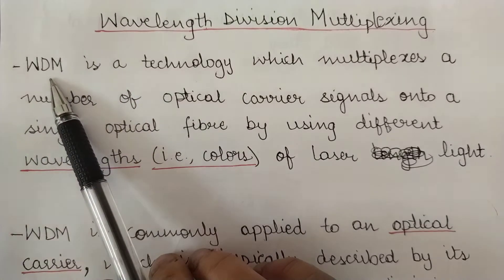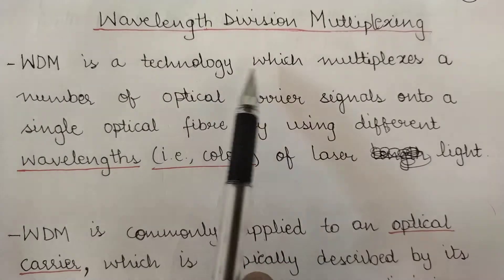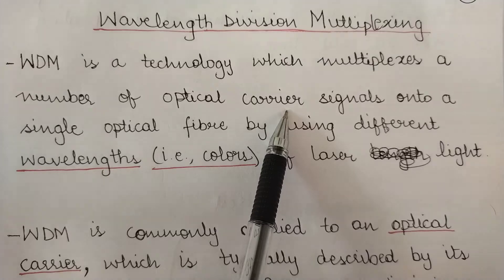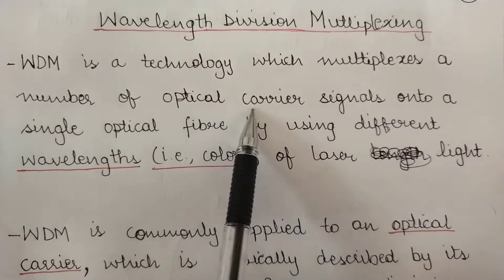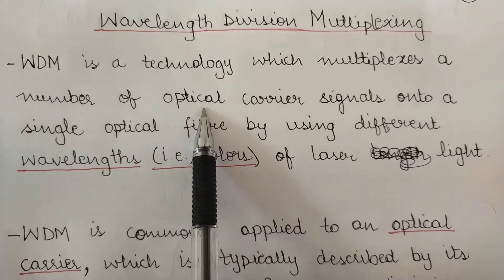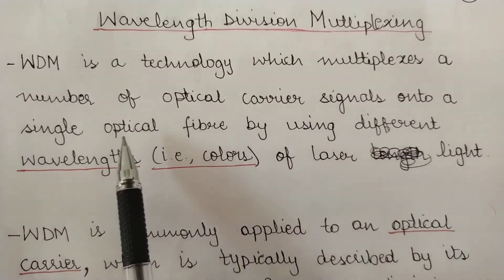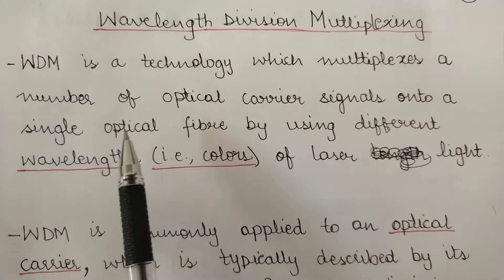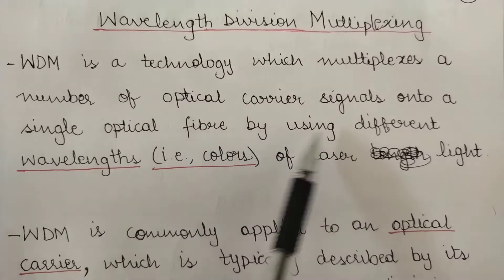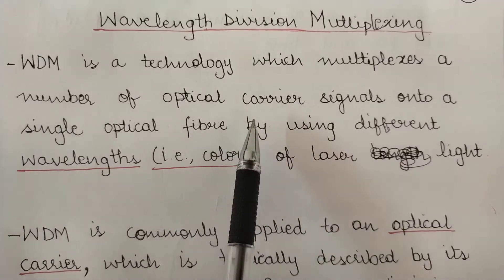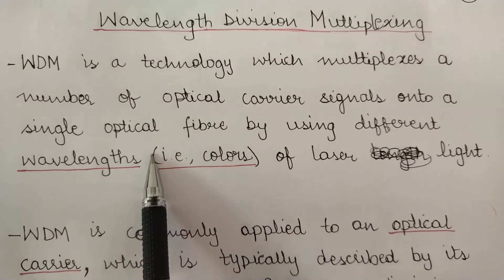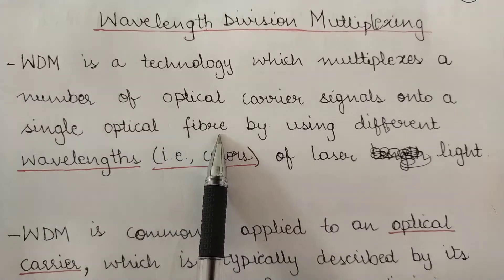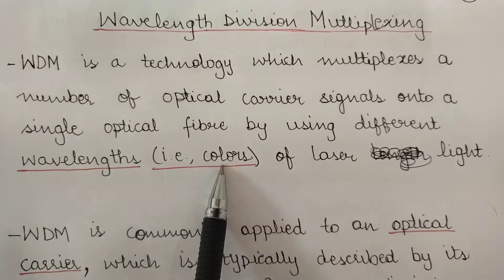WDM or Wavelength Division Multiplexing is a technology which multiplexes a number of optical carrier signals. These optical carrier signals are transmitted through fiber optics. It multiplexes a number of optical carrier signals onto a single optical fiber — signals coming from various optical fibers are combined into a single optical fiber using different wavelengths. These wavelengths are basically different colors of laser light.